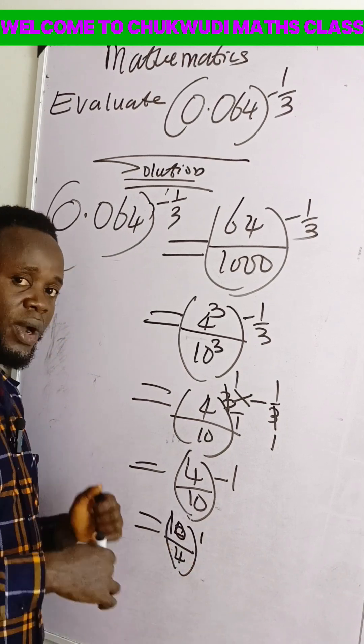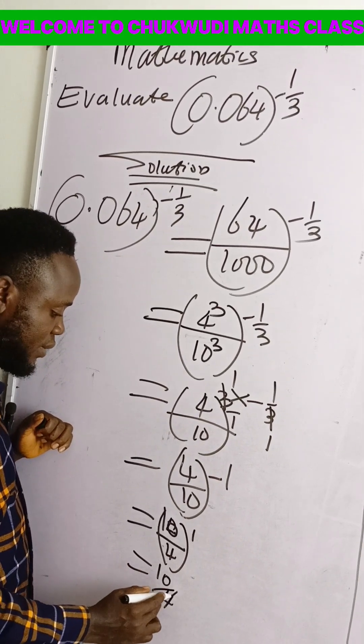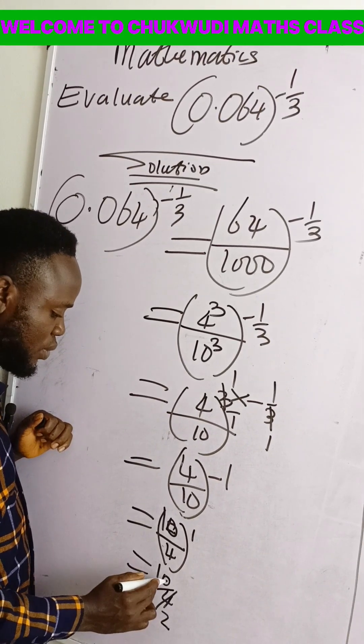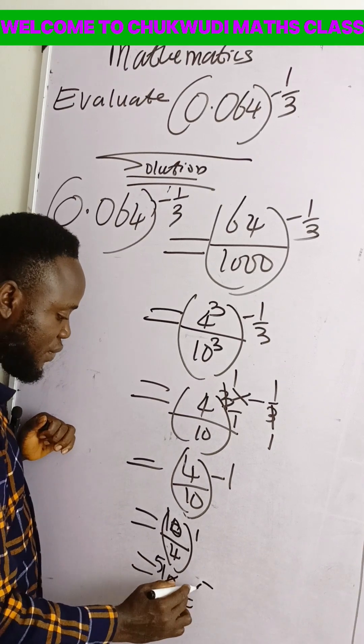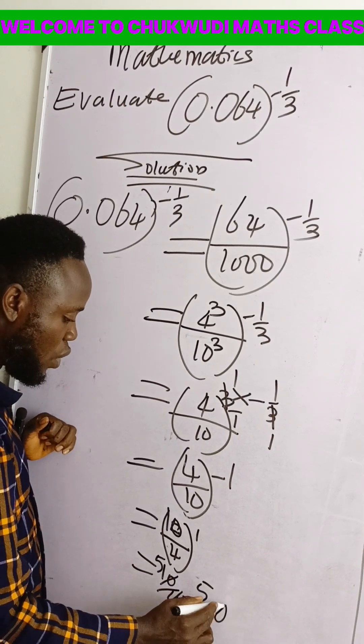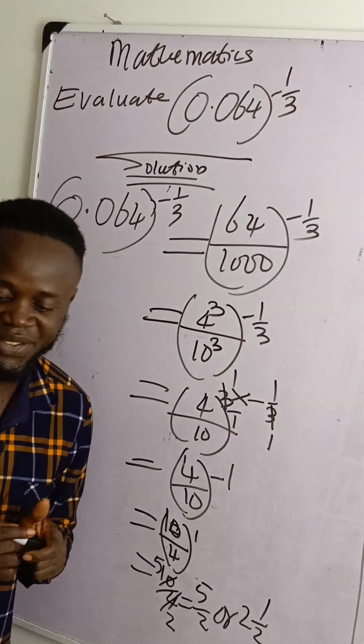Anything raised to power 1 is the same thing. Therefore, we will now have 10 over 4. And 2 divides 4, we have 2. 2 divides 10, you have 5. This will give us now 5 over 2, or 2 and 1 over 2 as our final answer. Thank you.